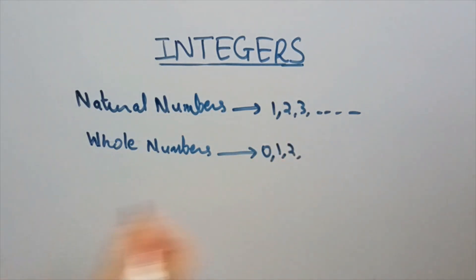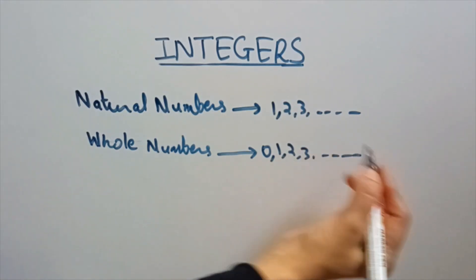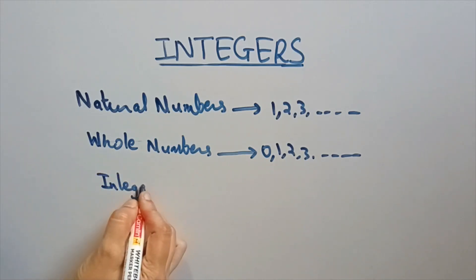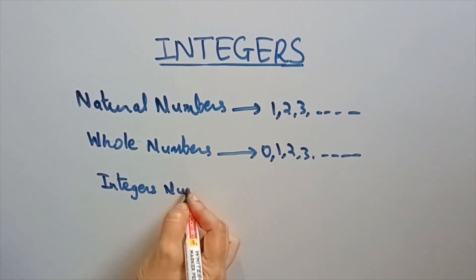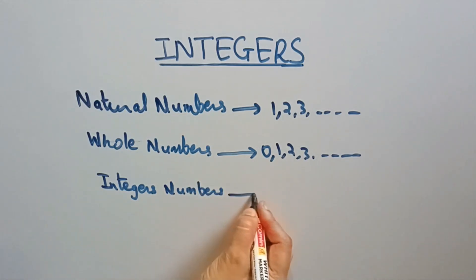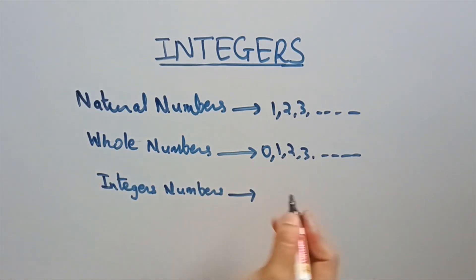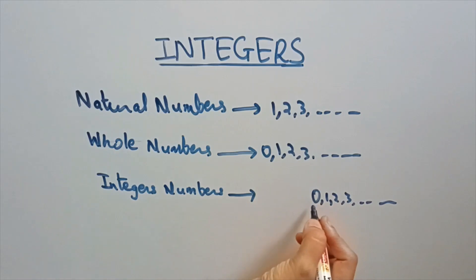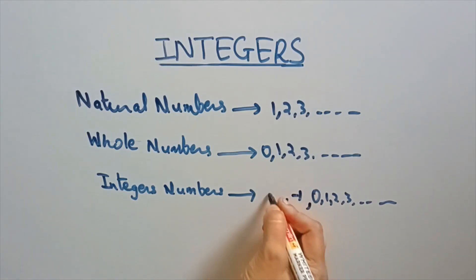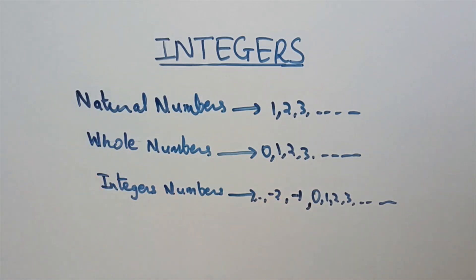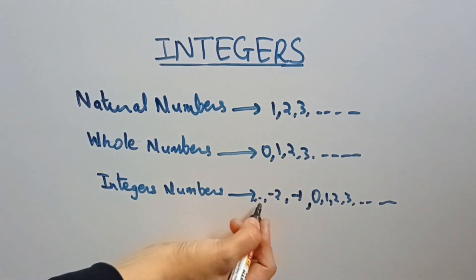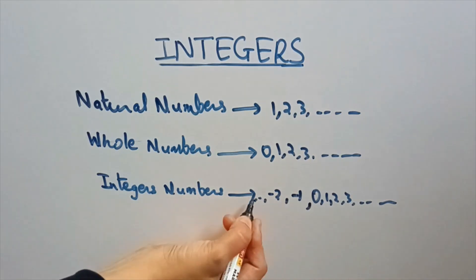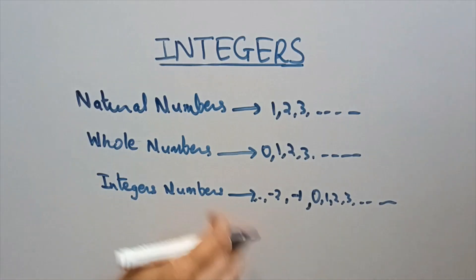Now, what are whole numbers? Whole numbers are all natural numbers including 0. We say that these are whole numbers. Now, what are integers? Integers are whole numbers including negative numbers. So whole numbers are 0, 1, 2, 3 and so on, and integers extend from positive infinity to negative infinity.